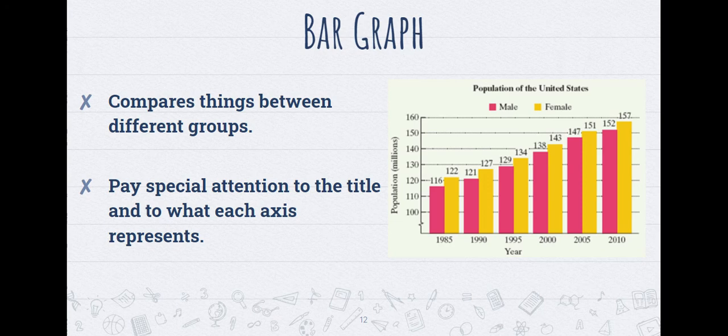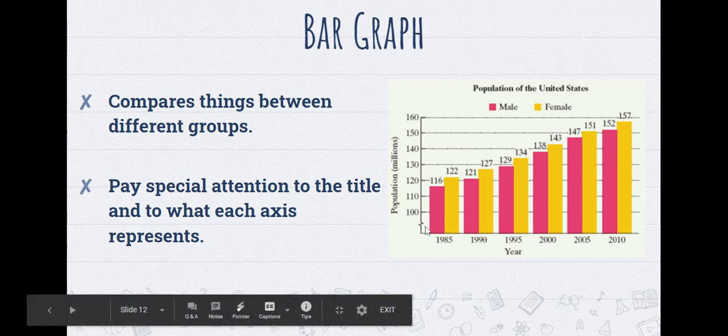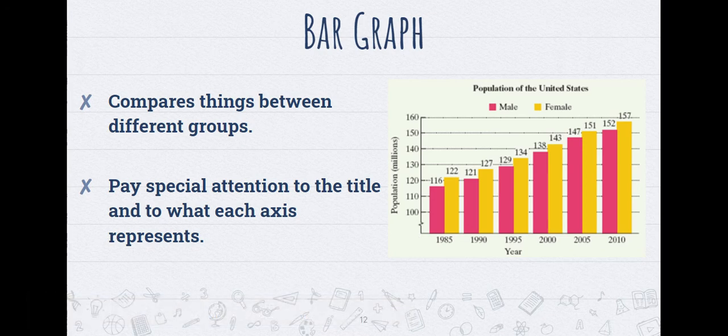Next we have a bar graph. This is going to compare things between different groups. A lot of the time we will have two different colors or you'll check your key. Pay special attention to the title and what each axis represents. Here we have the x-axis and here we have the y-axis. Down here we have the year and we have the population right here. You always want to pay attention to what is on those different axes so you can tell what information you are looking at.